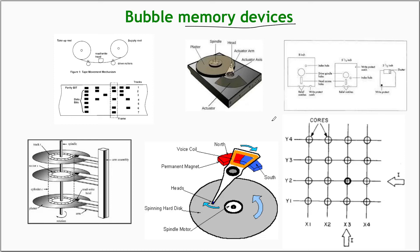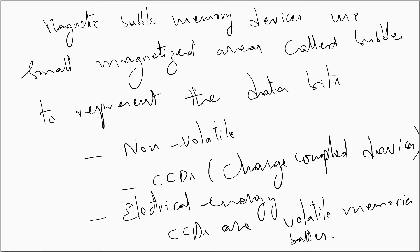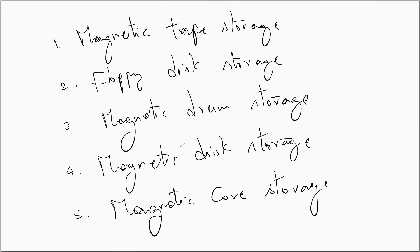In this video we have started our discussion from bubble memory devices. Magnetic devices essentially use magnetic bubbles, which are small magnetized areas on the surface of a magnetic material. Bubble storage devices are non-volatile, meaning they don't need any external power supply to retain their state, unlike charge coupled devices which are volatile. There are different types of magnetic storage devices: magnetic tape storage, floppy disk storage, magnetic drum storage, magnetic disk storage, and magnetic core storage.